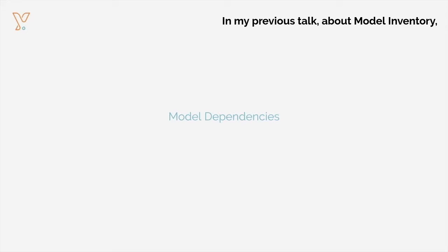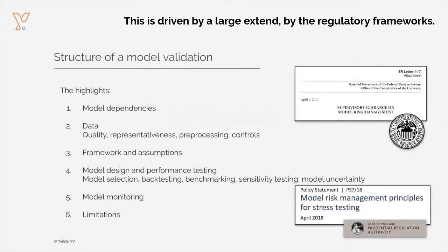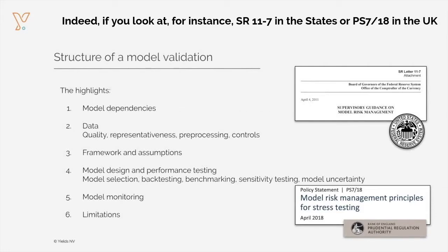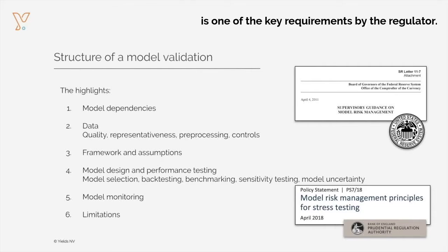In my previous talk about a model inventory, we already stressed the importance of being able to represent correctly relationships between models. This is driven to a large extent by the regulatory frameworks. Indeed, if we look at, for instance, SR 11.7 in the States or PS 7.18 in the UK, we will notice that being able to document properly and understand correctly the dependencies between models is one of the key requirements by the regulator.